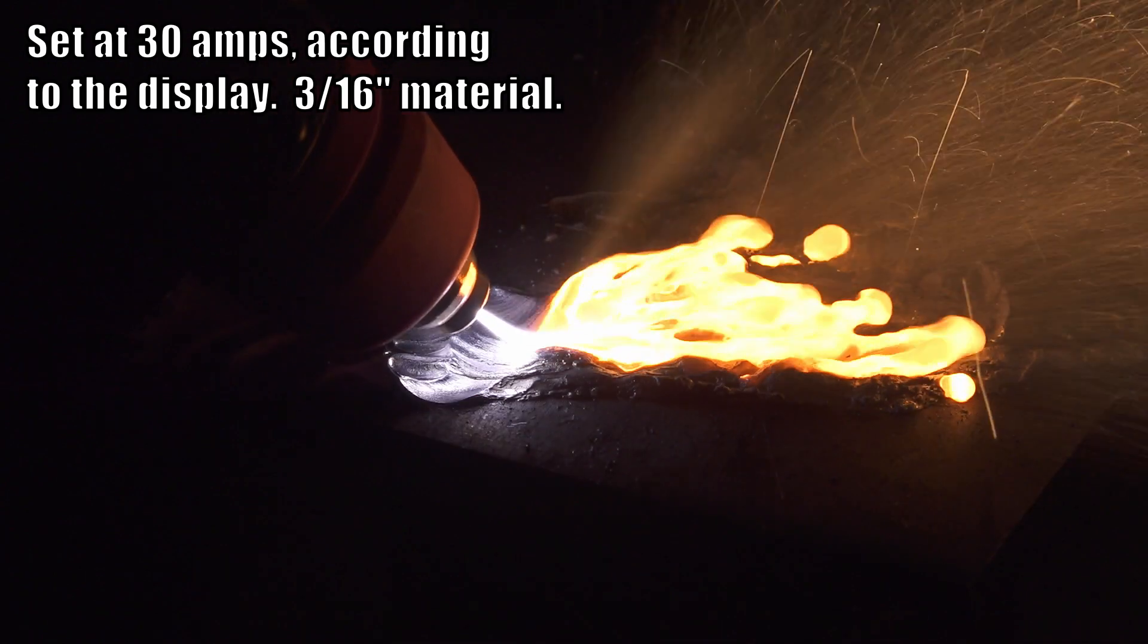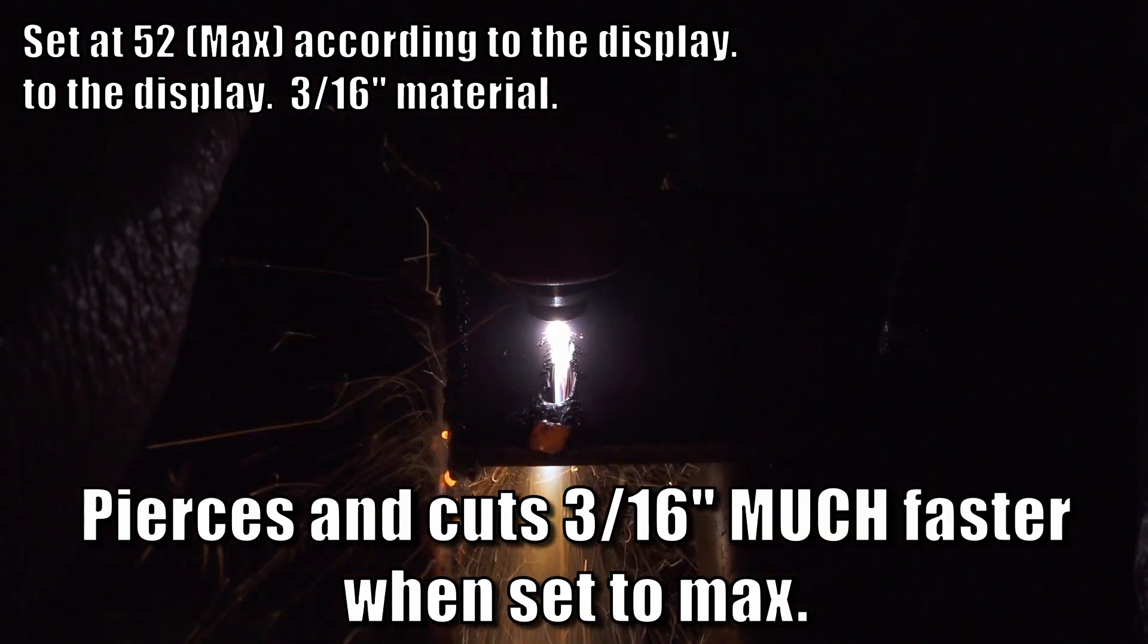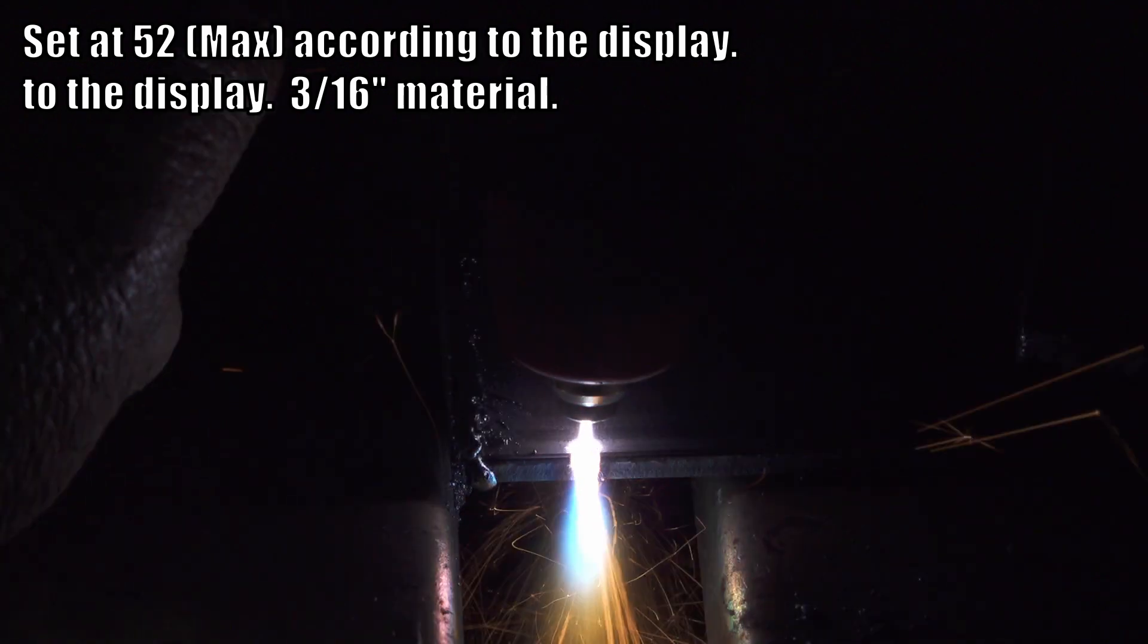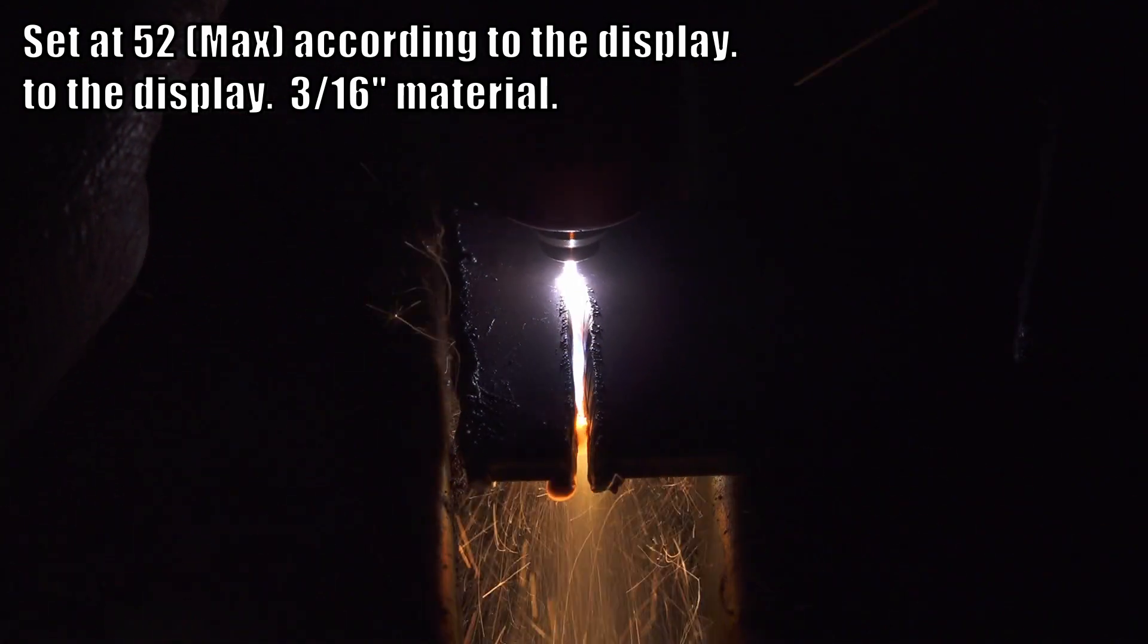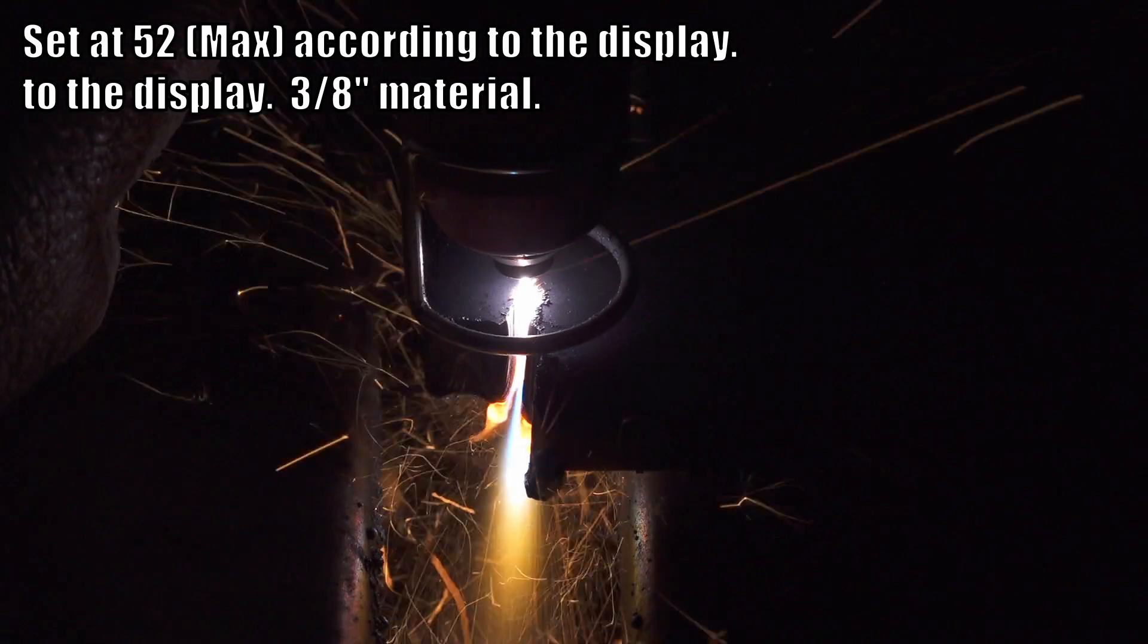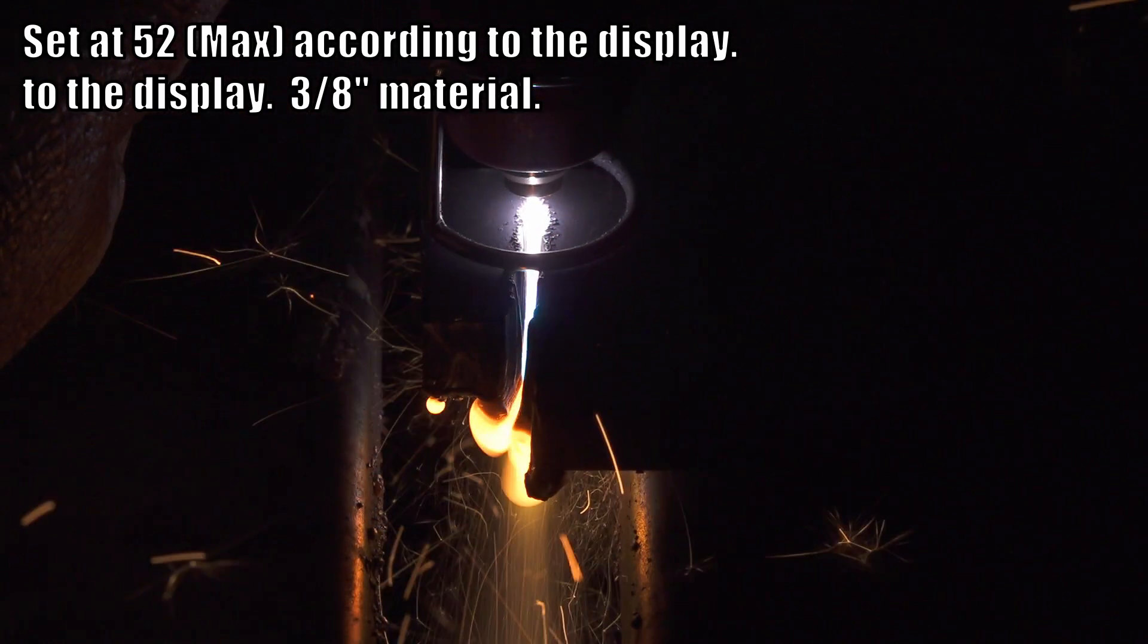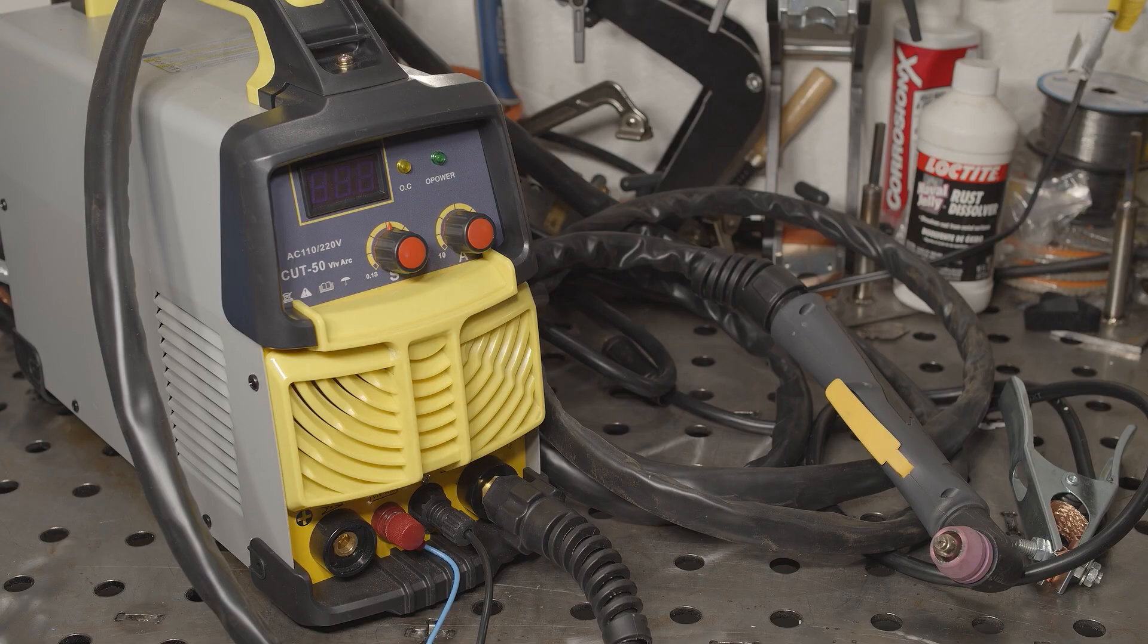When maxed out with the display showing 52 amps, it has decent power. It'll cut 3/8 inch material without too much trouble. However, despite being rated at 50 amps, I don't think it has more cutting power than the Powermax 30XP. In fact, I'd have to give a slight edge to the 30XP in terms of cutting speed and power. My guess is that the difference comes down to a more efficient torch design on the Hypertherm and possibly higher arc voltage.